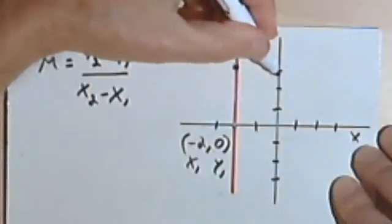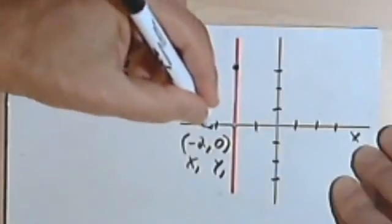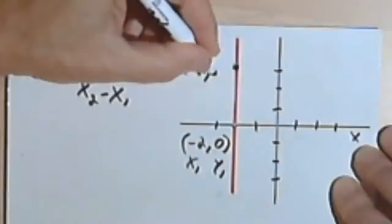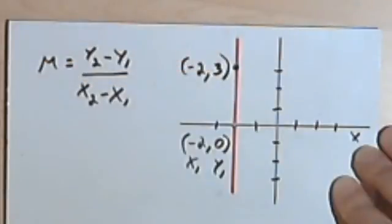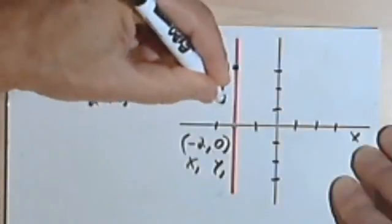And that looks like it's at the 3. So this point would be, I'm still at negative 2, negative 2, 3. And we'll call this x sub 2 and y sub 2.